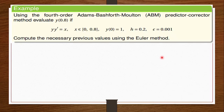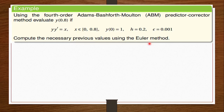This is the question: we are using the fourth order Adams-Bashforth-Moulton predictor-corrector method to evaluate y at 0.8, given y' = x/y over the interval 0 to 0.8, with initial value y(0) = 1, step length h = 0.2, and stopping criteria 0.001. Compute the necessary previous values using the Euler method.